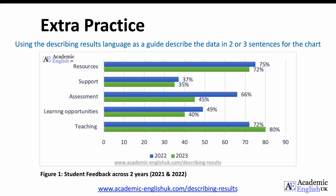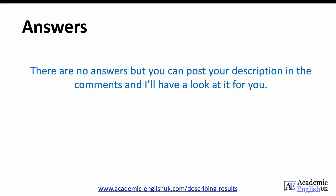Now it's your turn. Here is a bar chart of student feedback across two years, 2021 and 2022. Using the describing results language we have looked at today, describe the data in two or three sentences for the chart. Pause the slide and write some sentences. There are no answers for this chart, but you can post your description in the comments and I'll have a look at it for you.